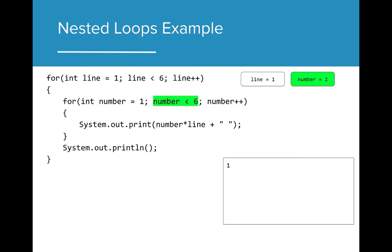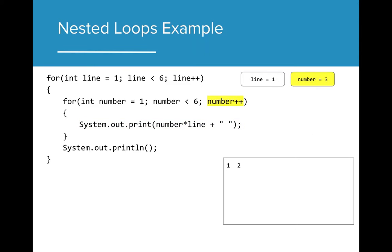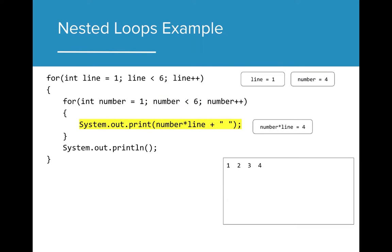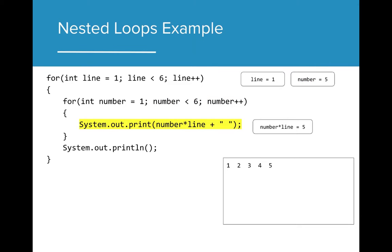The next step after the increment is a check of the boolean expression. Remember, we only initialize number at the beginning of the for loop. The print statement executes again. This time, number is equal to 2, so number times line is 2, and is printed to the console. Increment is then increased again, and the number is 3. The inner boolean expression is still true, so the code executes again. Number times line is 3, so it is printed to the console. Number increments again making it 4, the boolean is true, so the code continues to execute. Number times line is printed to the console. Number increments, passes the boolean expression, and prints number times line to the console.